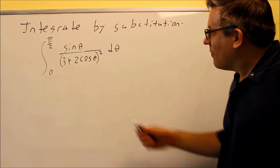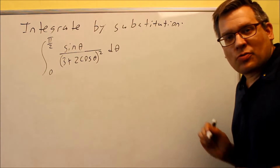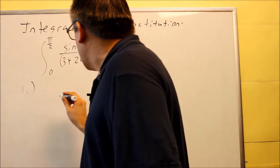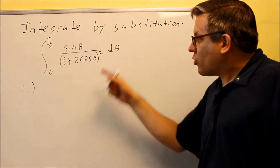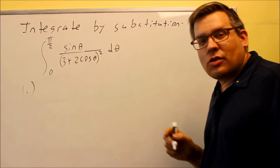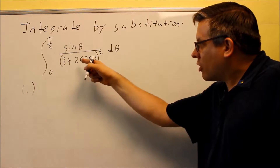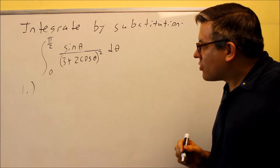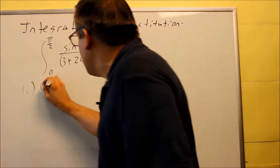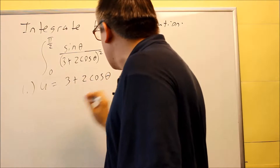It's time for some trig. You're going to start this problem out the same as the others when doing substitution. You always want to identify your u first — the u is going to be what's inside of something else. So we're going to pick the 3 plus 2 cosine theta inside the parenthesis. That's our u: 3 plus 2 cosine theta.